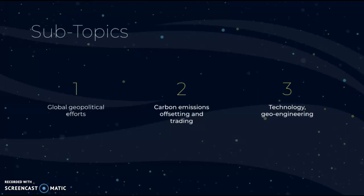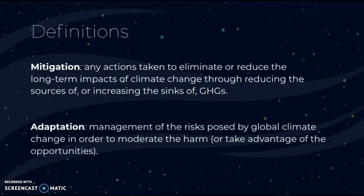First, let's start with some definitions. Mitigation is any action taken to eliminate or reduce the long-term impacts of climate change through reducing the sources of, or increasing the sinks of, greenhouse gases. Adaptation, on the other hand, is the management of the risks posed by global climate change in order to moderate the harm or take advantage of the opportunities.